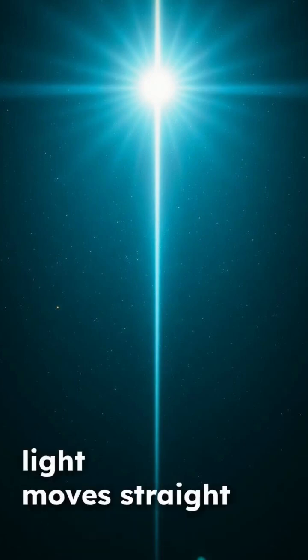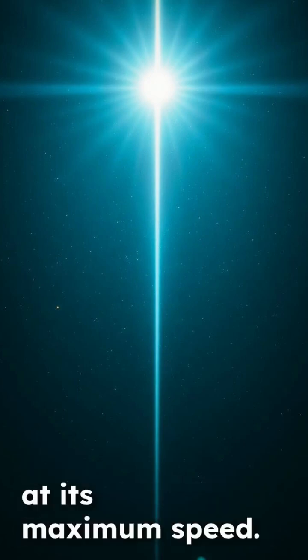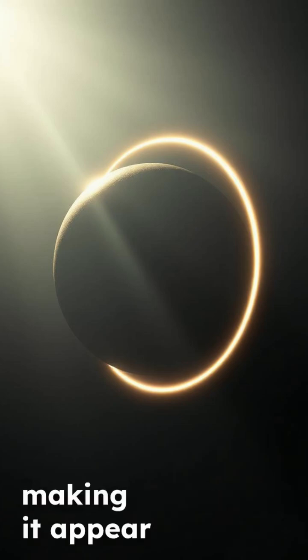In a perfect vacuum, light moves straight and unimpeded at its maximum speed. Strong gravity can curve light's path, making it appear bent.